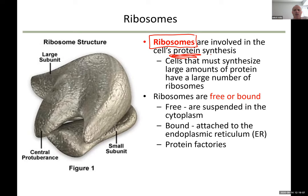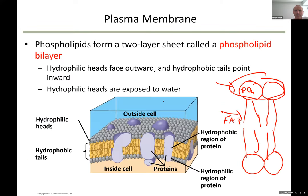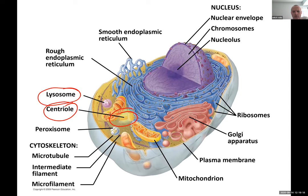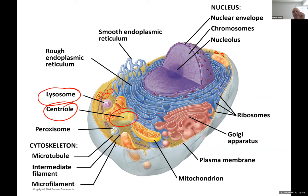Ribosomes can be free in the cytoplasm or they can be bound to the ER. Each cell is made of thousands, maybe hundreds of thousands of ribosomes because each ribosome produces a tiny microscopic protein. To make all the proteins we need, you require hundreds of thousands of ribosomes. Both free and bound ribosomes synthesize protein.